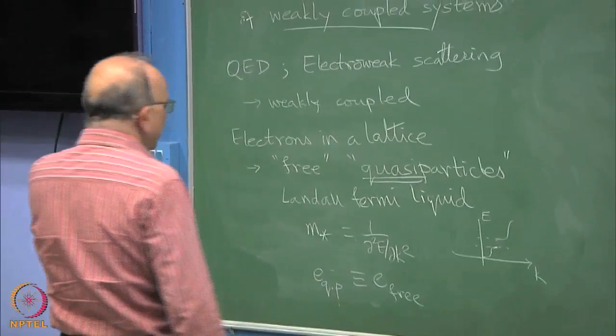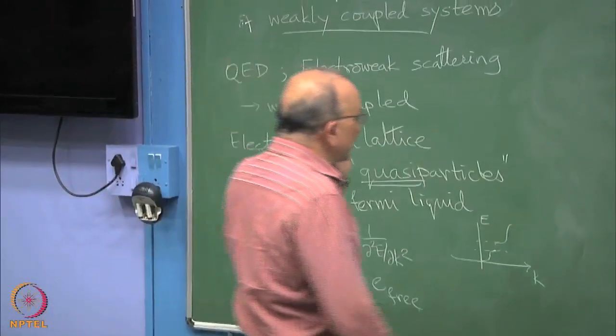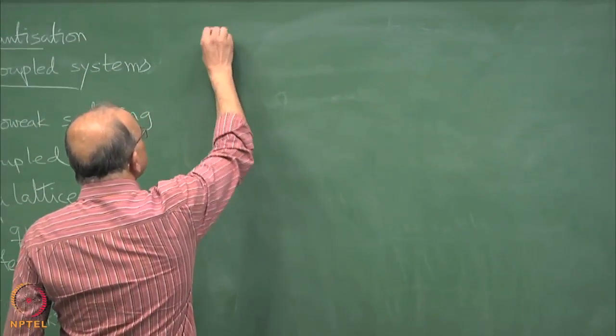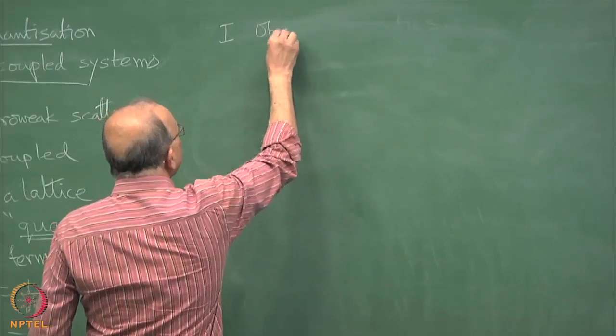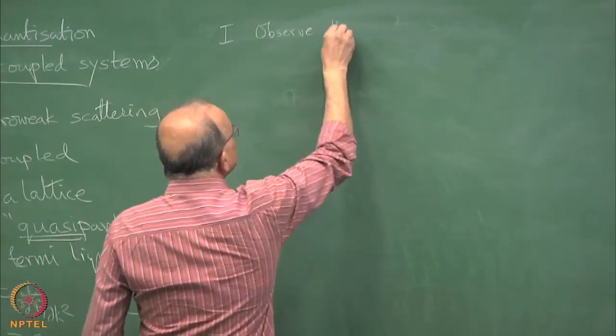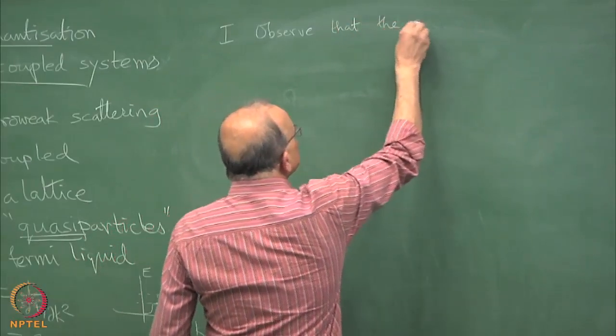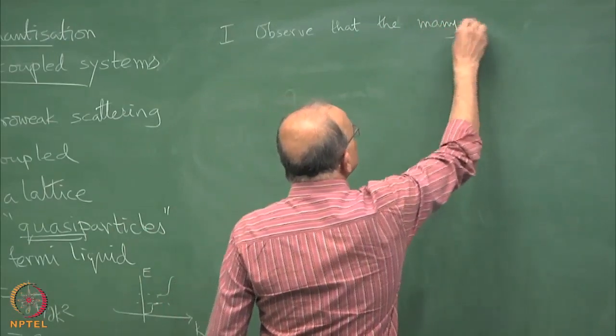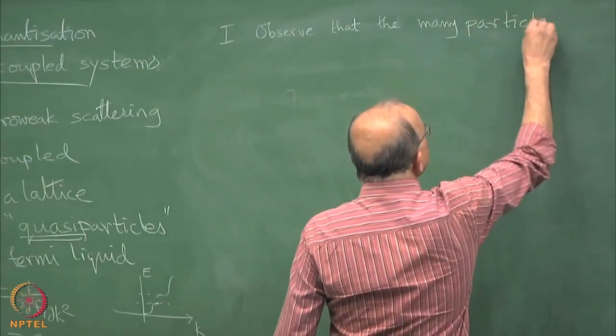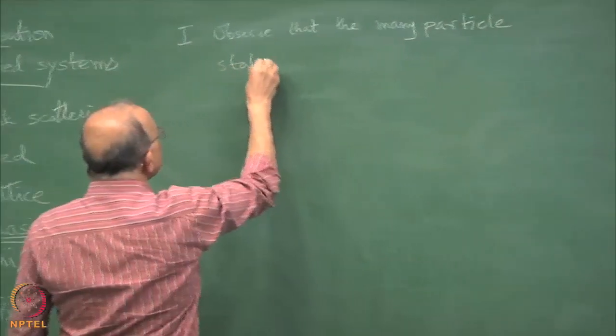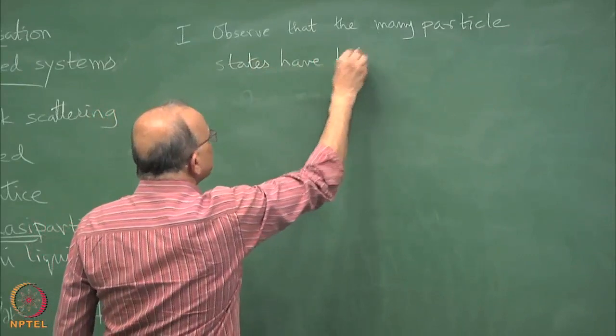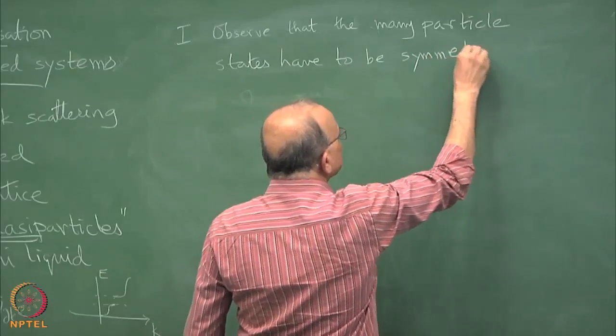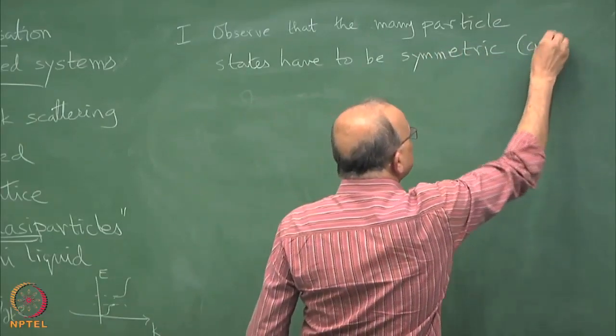This thing was thought up by Fock and Dirac along the following lines. The first observation is that observe that the states many particle states have to be symmetric or anti-symmetric. I will write the fermion part in the bracket.